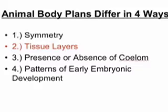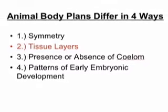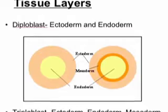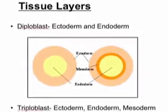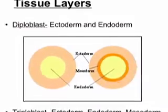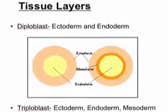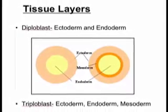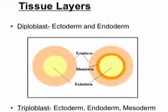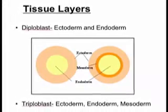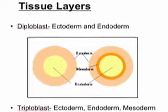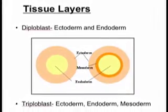Let's talk about tissue layers. Most animals have two or three tissue layers. The ones with two are called diploblasts — they have endoderm and ectoderm. The ones with three are triploblasts — they have endoderm, mesoderm, and ectoderm. Only sponges don't have ecto-, endo-, or mesoderm; they have epithelium.